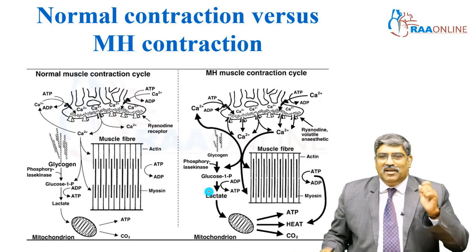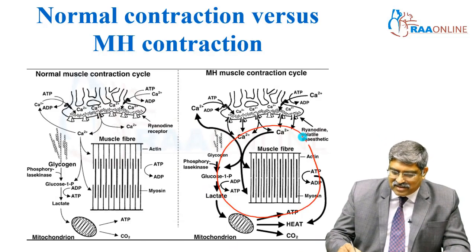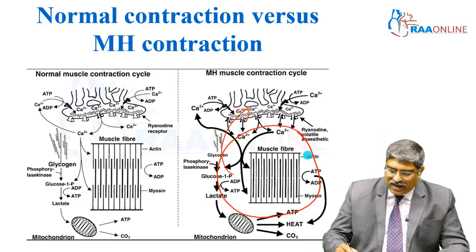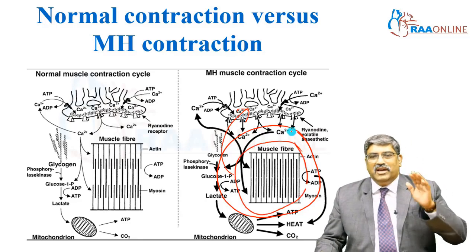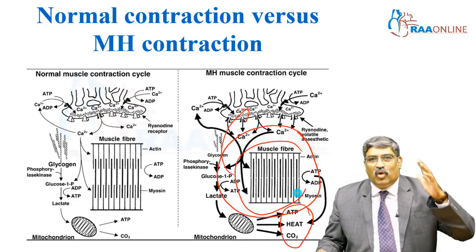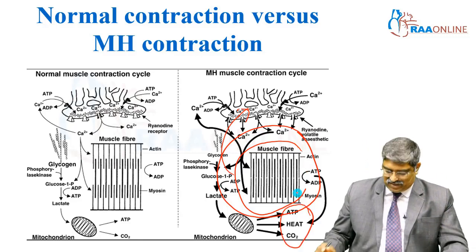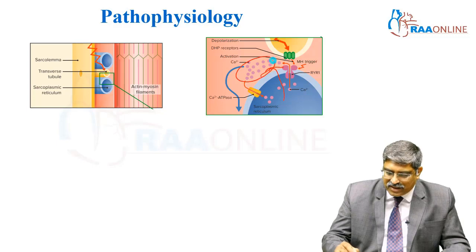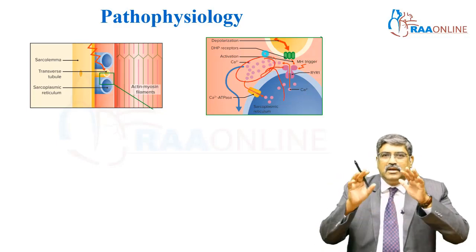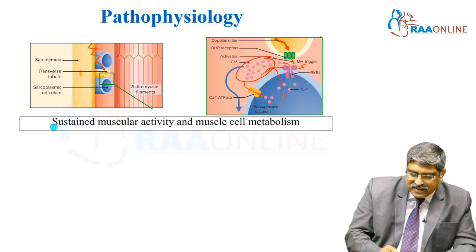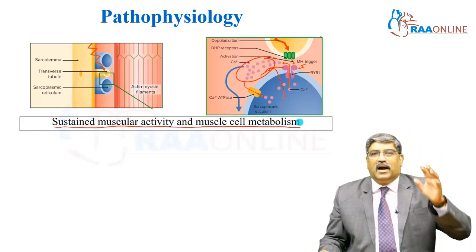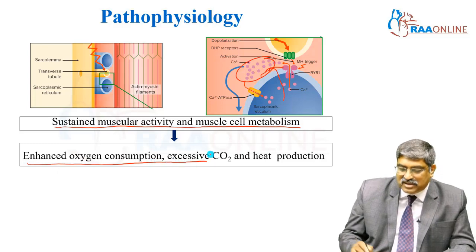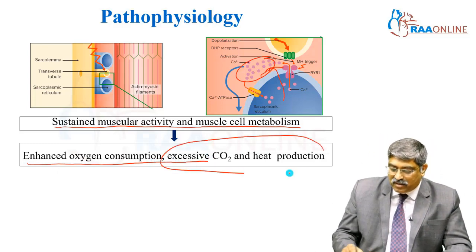What happens in malignant hyperthermia? The calcium remains inside the cytoplasm and does not go back into the sarcoplasmic reticulum. You can see the sustained contraction of the skeletal muscle, thereby generating more heat, more ATP consumption, and more carbon dioxide. There is sustained muscular activity and increased muscle cell metabolism, causing increased oxygen consumption, excessive carbon dioxide and heat production.